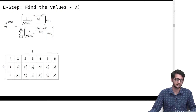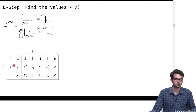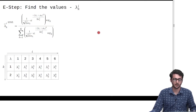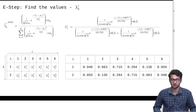This table indicates that there are 6 points represented by i and there are 2 distributions indicated by k. Lambda_1_1 indicates the probability that point 1 belongs to distribution 1. Likewise, we have 2 probability values for each of the 6 points. Let us substitute the values of mu, sigma, pi, and x for the first point and find the value of lambda_1_1. On substitution, these are the values that we get.